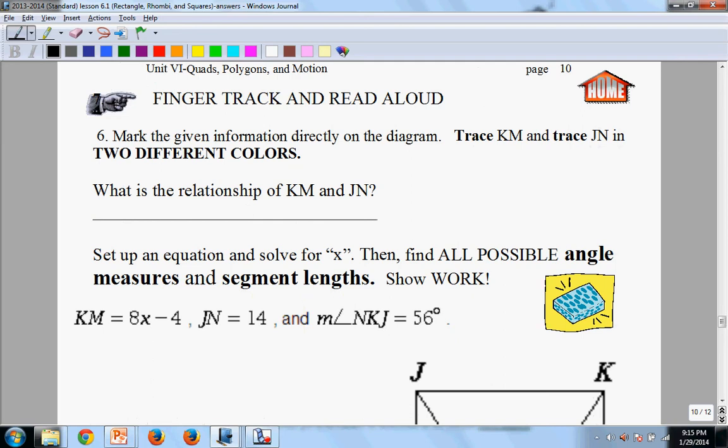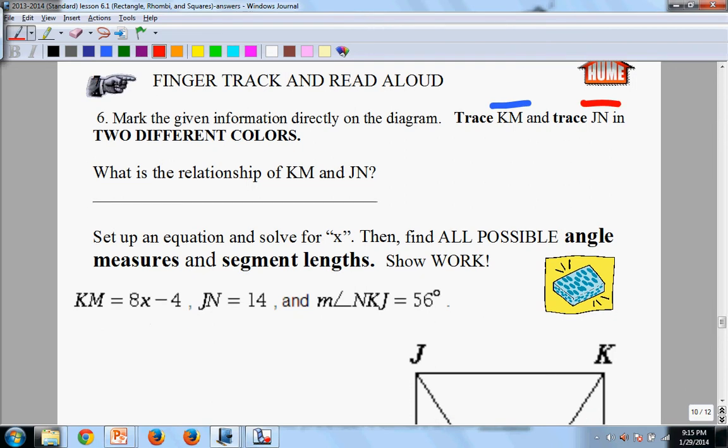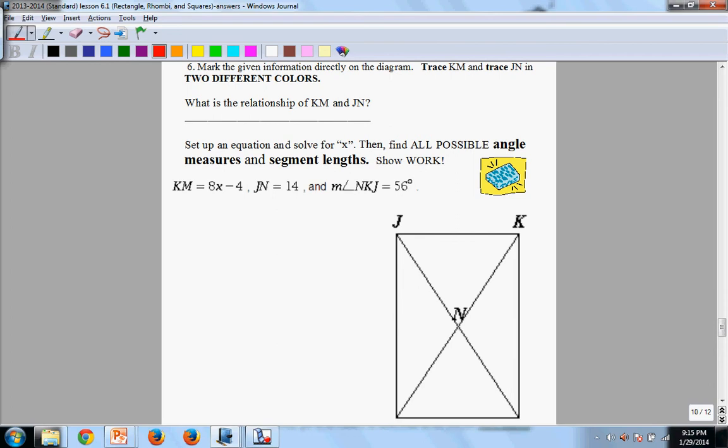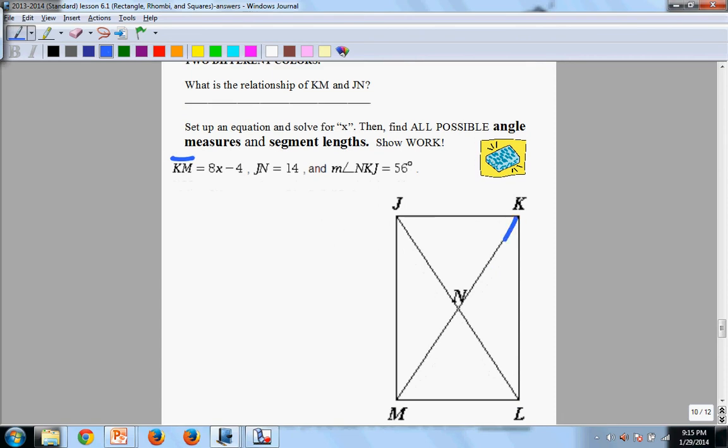It says mark the given information directly on the diagram. Trace KM and trace JN in two different colors. So let's look at our given information here. And again, we're going to use two different colors. So here we have KM. Let's trace that. K all the way to M. We're going to do that in blue. Trace it. And then we're going to label. If you can label in the colors, that helps. That's going to be 8X minus 4.